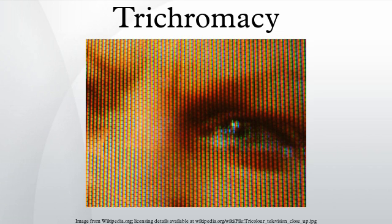Research indicates that trichromacy allows animals to distinguish red fruit and young leaves from other vegetation that is not beneficial to their survival. Another theory is that detecting skin flushing and thereby mood may have influenced the development of primate trichromatic vision. The color red also has other effects on primate and human behavior, as discussed in the color psychology article.